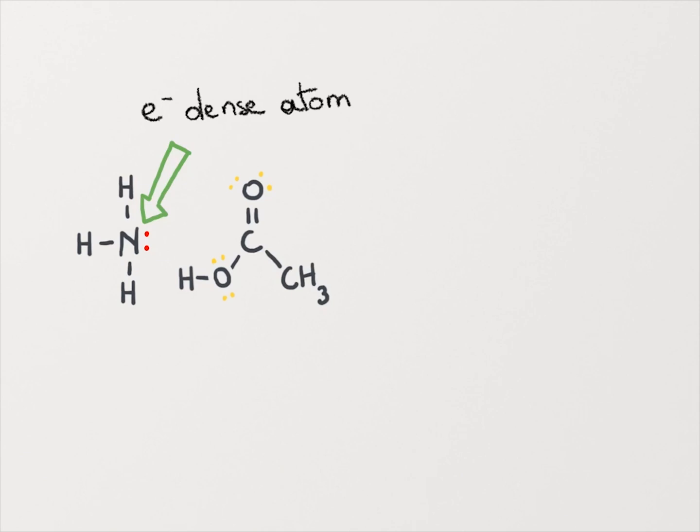The acetic acid molecule has one hydrogen atom that's attached to an oxygen. And because oxygen is much more electronegative than hydrogen, we learned that in that covalent bond between hydrogen and oxygen, the two electrons are shared unevenly. And in this case, the hydrogen is an electron-poor atom.